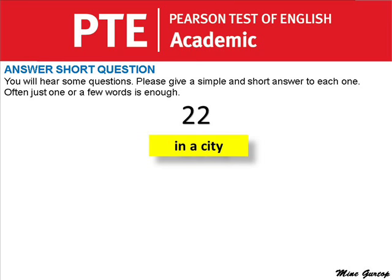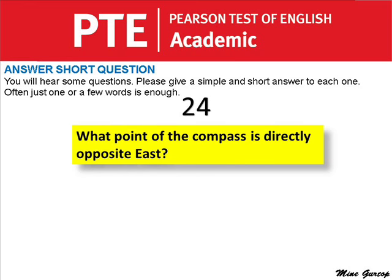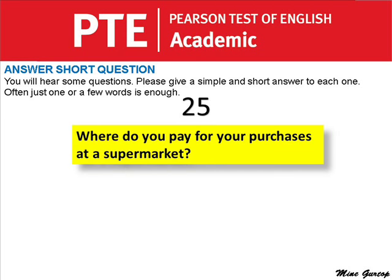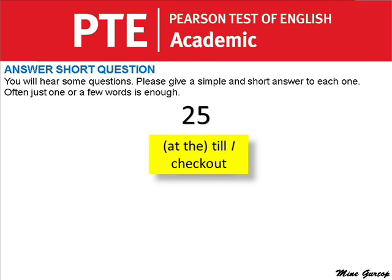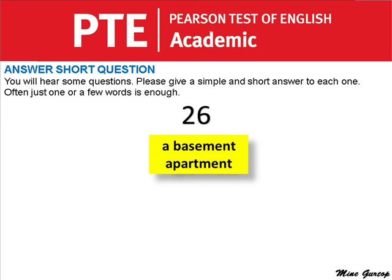What do we call it when the moon completely blocks out the light from the sun? What point of the compass is directly opposite east? Where do you pay for your purchases at a supermarket? What do you call an apartment that is below ground level — a basement apartment or a penthouse apartment?